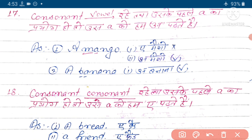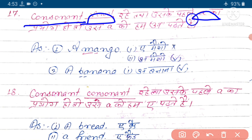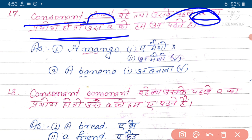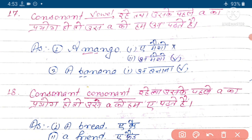Hum log jaante hain ki agar kisi word mein consonant ke just baad vowel rahe, toh us word se pahle 'a' agar prayukt hua hai, us 'a' ko hum log 'an' padhate hain.